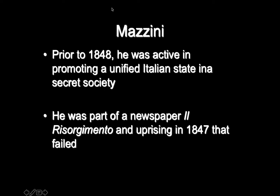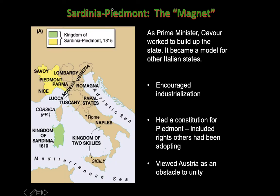Sardinia Piedmont becomes the magnet for this unification. Cavour has a plan, and his first success is simply being the political leader of Sardinia Piedmont. This map gives us a nice chance to look at Sardinia Piedmont — Sardinia in green, Piedmont in yellow, merged together after 1815.